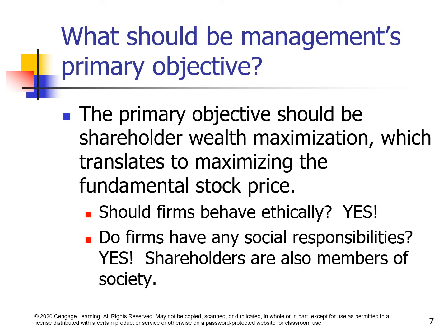What should be management's primary objective? The primary objective should be shareholders' wealth maximization, which translates to maximizing the fundamental stock price. Should firms behave ethically? Yes. Do firms have any social responsibilities? Yes — shareholders are also members of society.